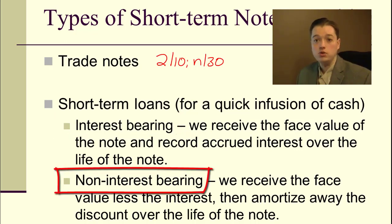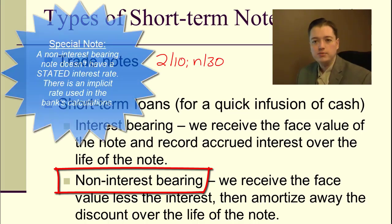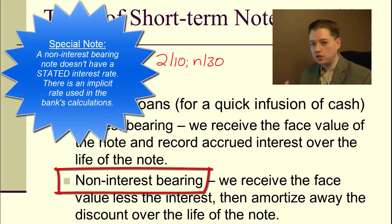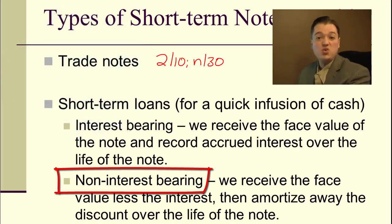A non-interest bearing loan doesn't have an interest rate. What they do instead is instead of giving you the $100,000 and then you pay 5% interest over the year and give them back $105,000 a year from now, what they do is they say, well, you need $100,000, you can pay back the $100,000 at the end of the year. Here's $92,000. And they take the interest out by not giving you the full face value up front.